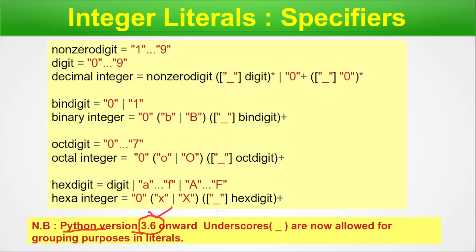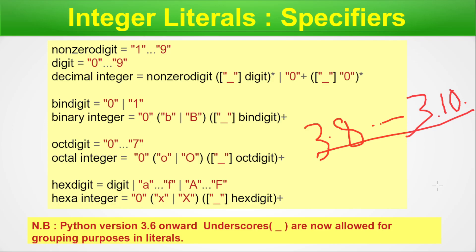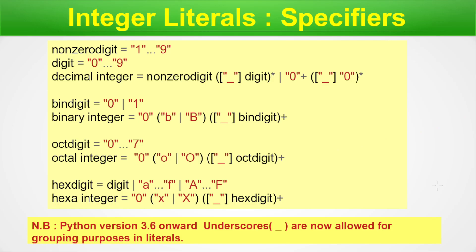Note that from Python version 3.6 onwards, underscores are allowed for grouping purposes in literals. This means you can use underscores for readability in numeric literals when using Python interpreter 3.6 and above. In this series we are using Python 3.8 or Python 3.10.